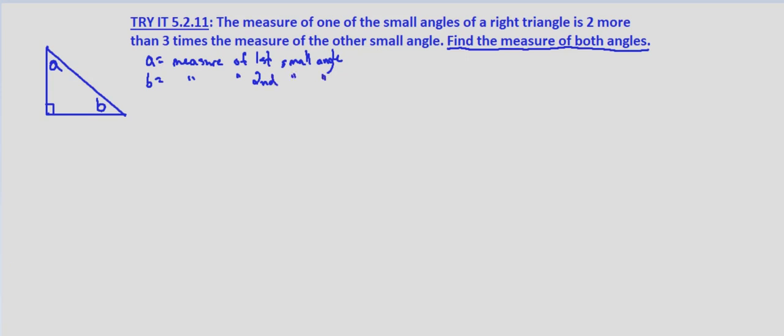So what do we know from our given information? We know that the measure of one of the small angles is two more, so plus two, than three times the measure of the other small angle.